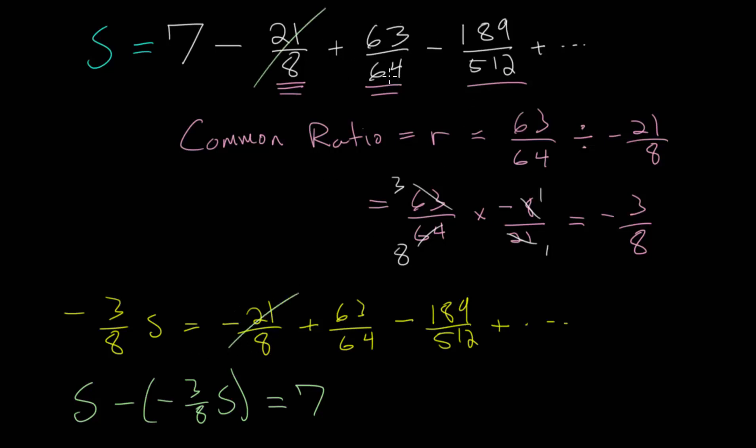And here we have 63 over 64 minus 63 over 64. Those will also cancel. We have minus 189 over 512, and we are subtracting a number from itself, and so those will cancel out. We will also get 0, and this will go on forever. Essentially, every term besides the 7 in this top geometric series will cancel out with every term in the new geometric series that we created.